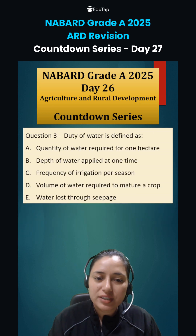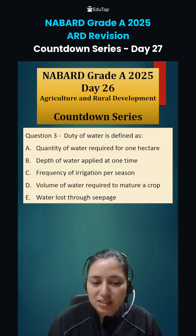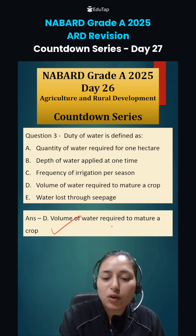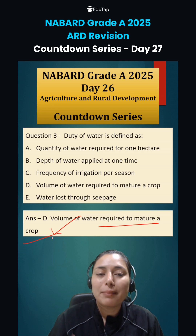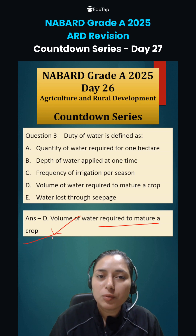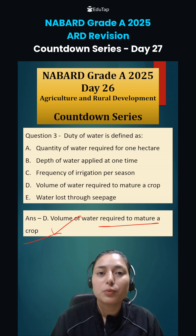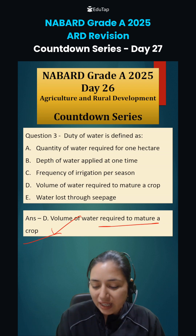The next question was: duty of water is defined as what? The correct answer is the volume of water required to mature a crop. The amount or volume of water required for a crop to be matured is known as the duty of water.